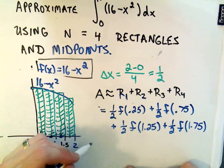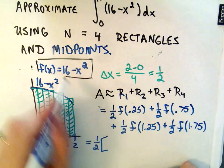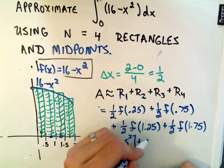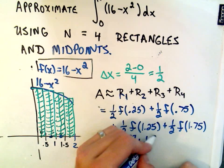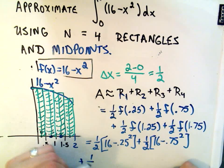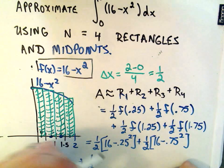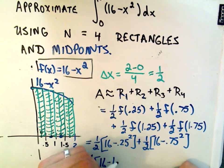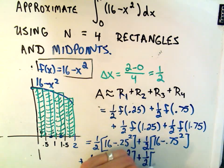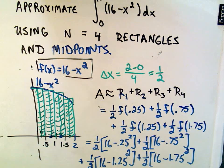And lastly, you would have to plug this in. This is where it would be real tedious. So 1 half, you would have to plug 0.25 into your function. So 16 minus 0.25 squared, whatever that is, plus 1 half, we plug 0.75 into our function. 16 minus 0.75 squared, plus 1 half. We need to plug 1.25 into our function to get the height of that third rectangle. 16 minus 1.25 squared. Last but not least, our fourth rectangle has width 1 half and 16 minus 1.75 squared. Whatever that works out to be.